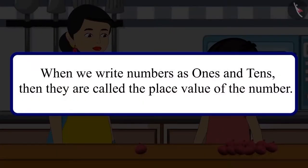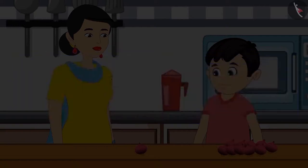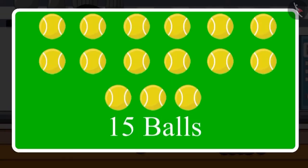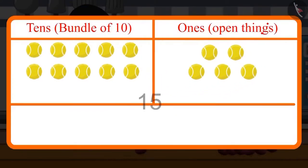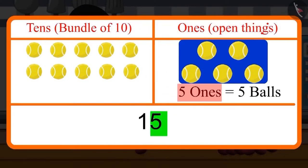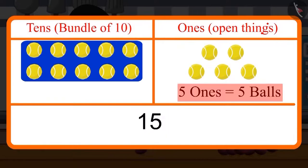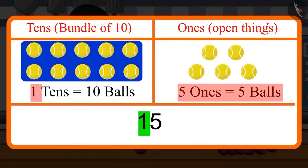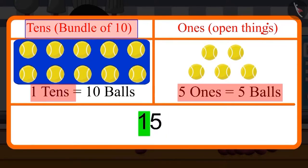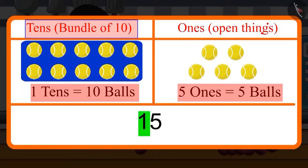So children, do you know that when we write numbers in ones and tens, we call them the place value of the numbers? For example, if I have 15 balls, then in 15, the place value of 5 is 5 ones, which means 5 balls, and the place value of 1 is tens, which means 10 balls.